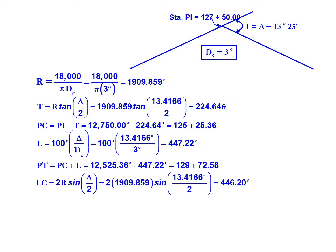We can calculate our long cord: 2 times the radius of 1909.859 feet multiplied by the sine of delta divided by 2, that's 13.4166 degrees divided by 2, gives us a long cord of 446.2 feet.